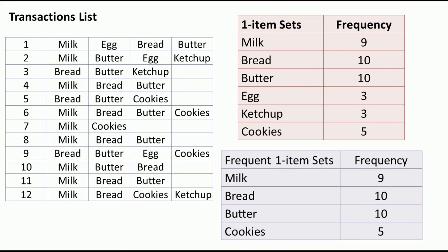There are 12 transactions given. First, I will create a table listing all one-itemsets and their frequency. The items are milk, bread, butter, egg, ketchup, and cookies — six products in total.